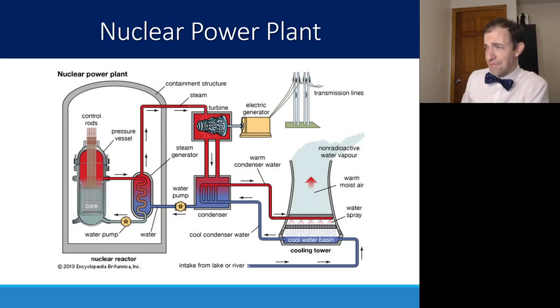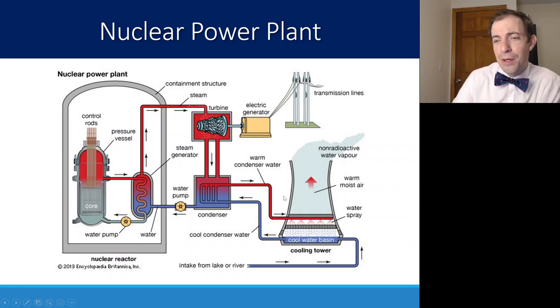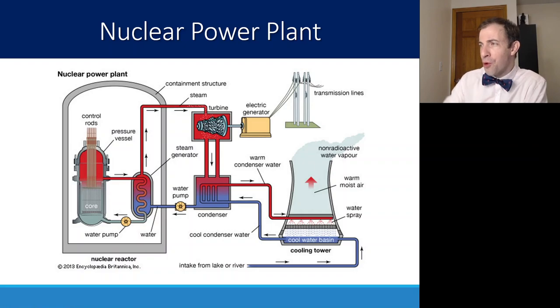As we saw, every time a uranium undergoes fission, it splits apart, but also releases a little bit of energy. That energy heats up. So the more energy that's created, the hotter and hotter this reactor becomes. And just like we see with pretty much any power plant, the process of creating electricity in a nuclear power plant is just heating up water and turning it into steam.